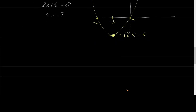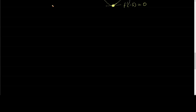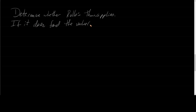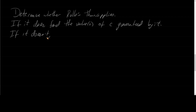For the next examples, the instructions are: determine whether Rolle's Theorem applies. If it does, find the value or values of C guaranteed by it. If it doesn't, explain why not.